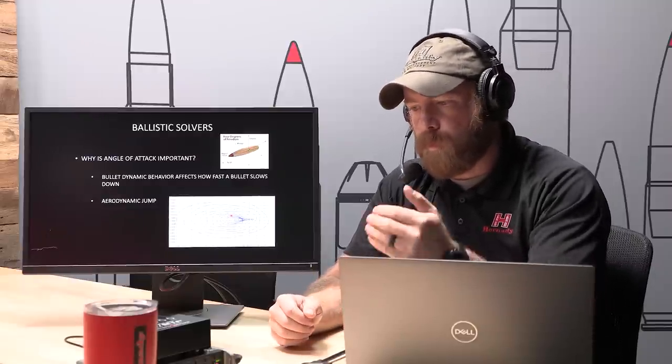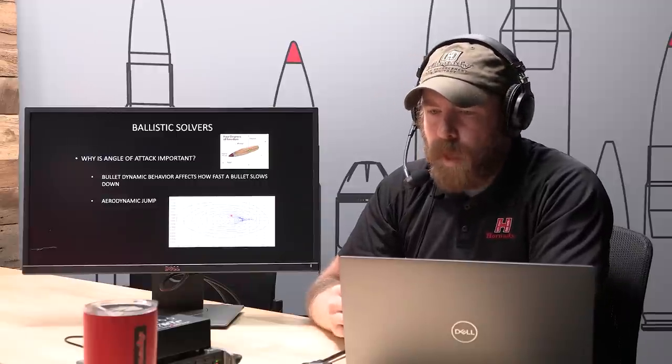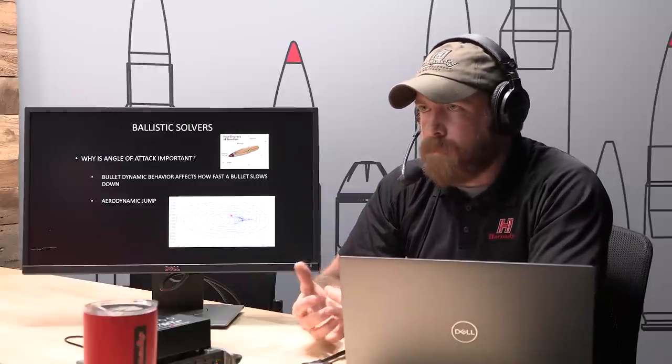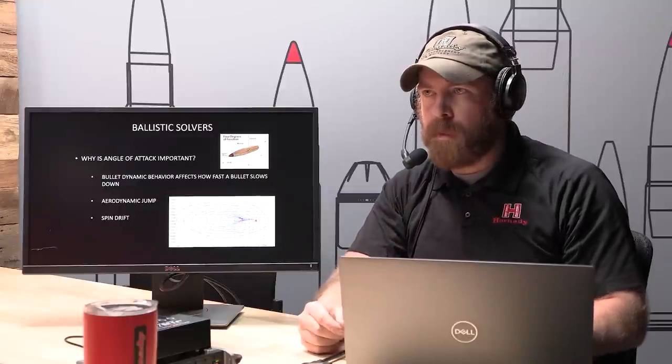The bullet nose is never perfectly at zero, and that means those dynamic behaviors are going to have an impact on your trajectory. To correctly account for aerodynamic jump — the vertical jump that occurs due to a crosswind component — you have to have the angle of attack; you can't calculate it without that. Spin drift is the same thing: as the bullet continues downrange, its nose points more and more to the right. You can't calculate spin drift without an angle of attack. Now you can estimate these things, but you can't calculate them — there's a difference there.